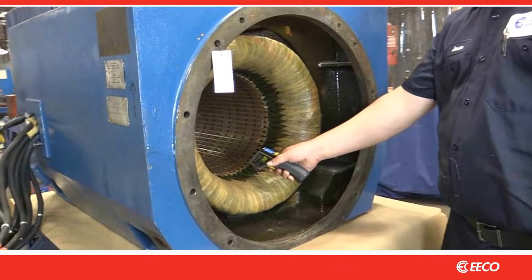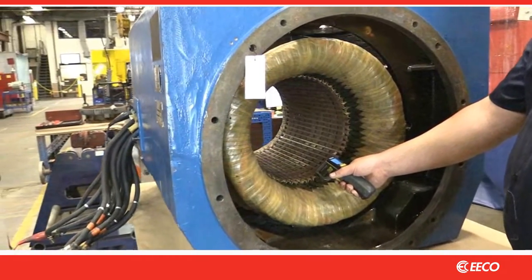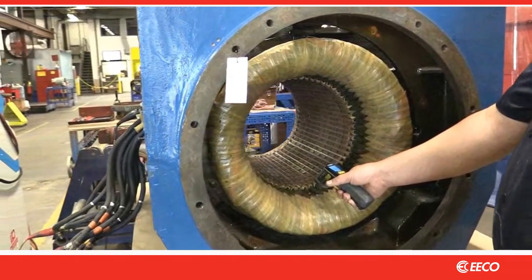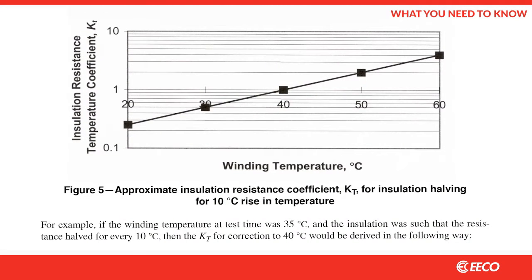Whether in the field or the repair shop, temperature must be considered when conducting an insulation resistance test. With every 10 degree centigrade change in temperature, insulation resistance changes by a factor of two. For example, the insulation resistance of a motor recorded at 30 degrees centigrade would read half that in megaohms at 40 degrees centigrade.